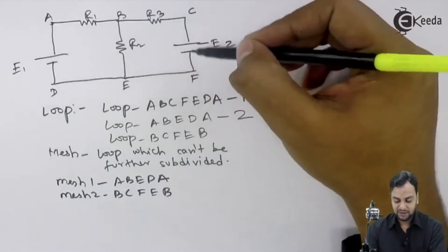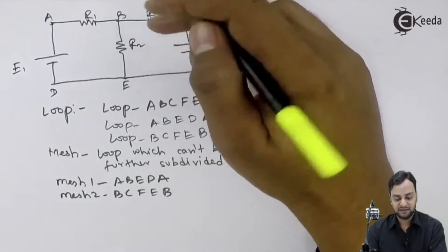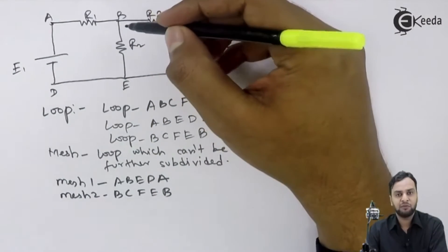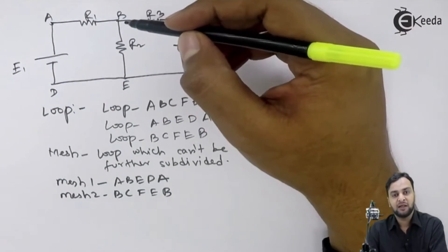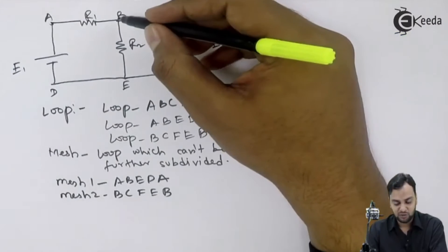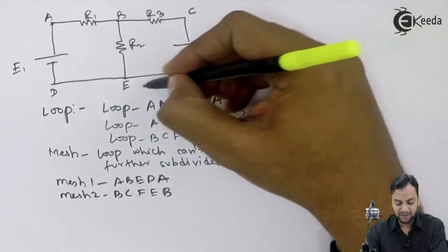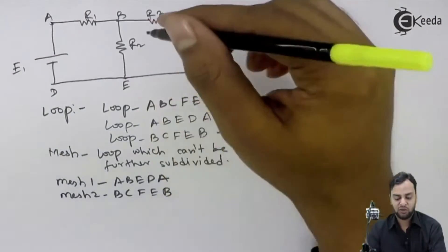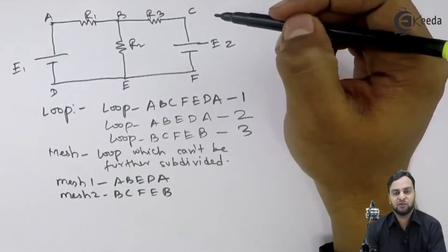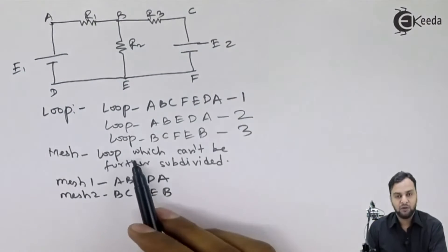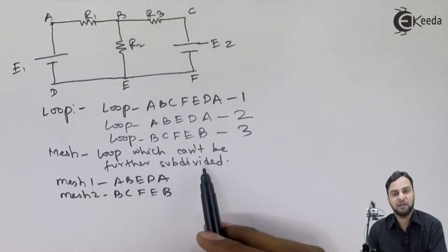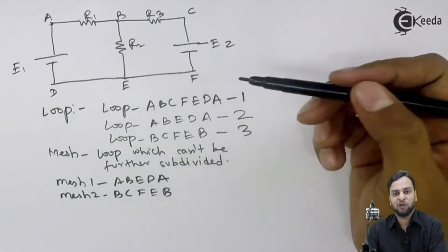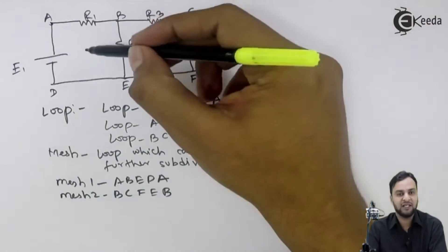B-C-F-E-B — this is also one complete path. You are starting from the point and you are returning to that same point — you started from B and you are returning to B. So this is loop 3. There are totally 3 loops in this circuit. So what is a mesh? A mesh is a loop which cannot be further subdivided. Out of these 3 loops, which one cannot be further subdivided? Of course the inner ones.